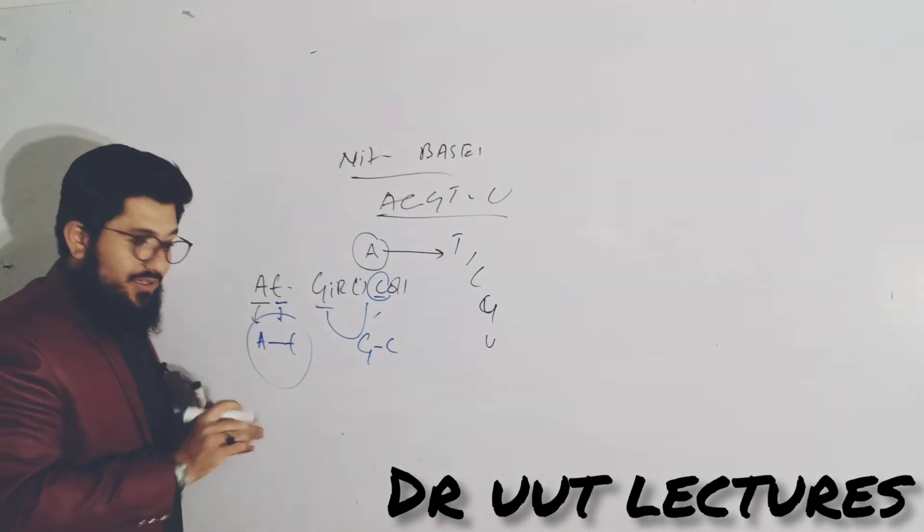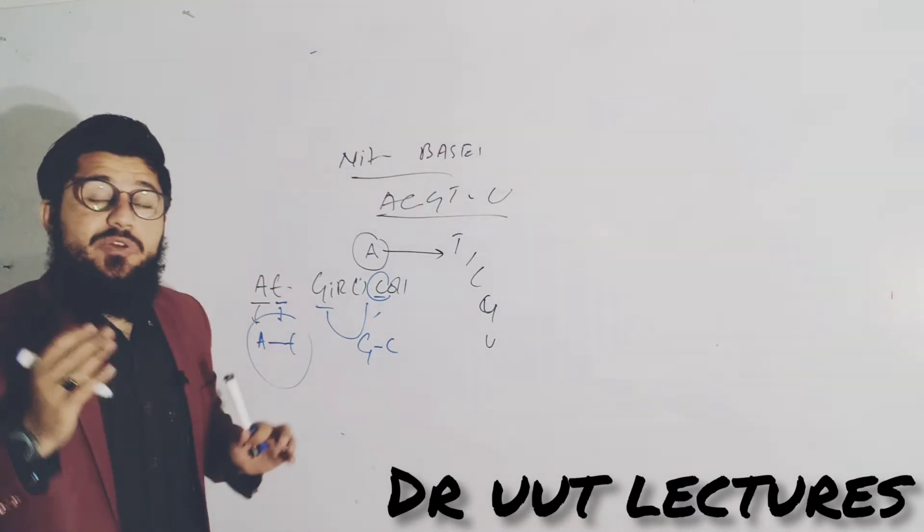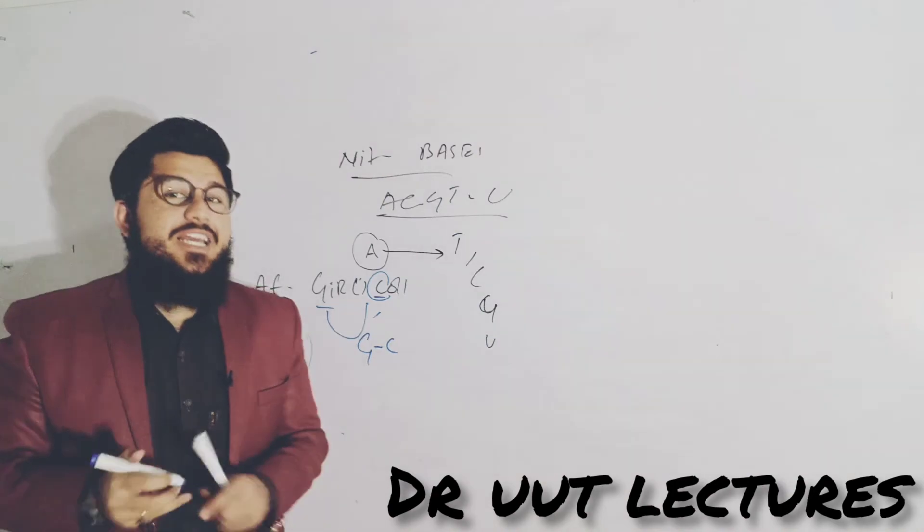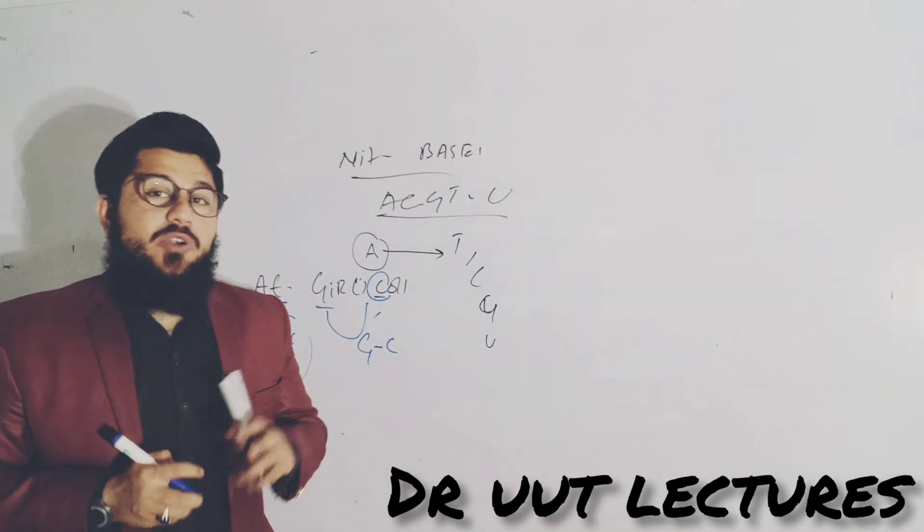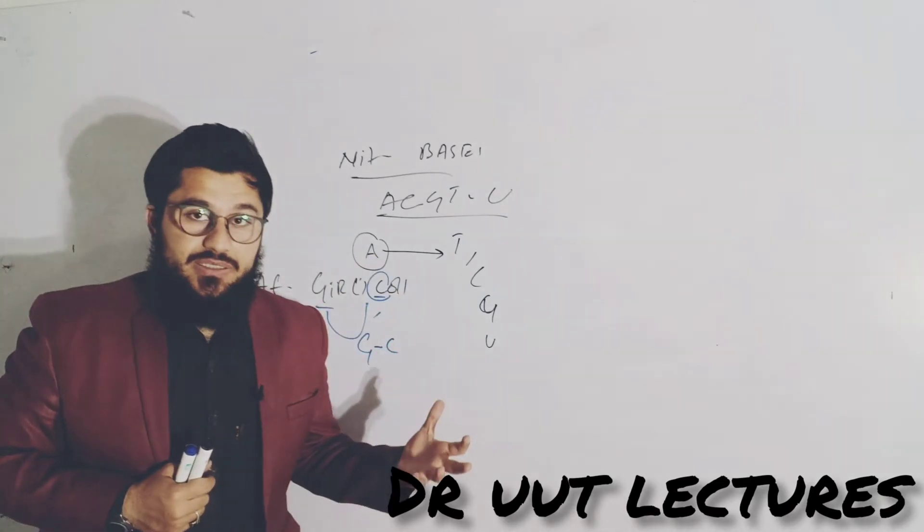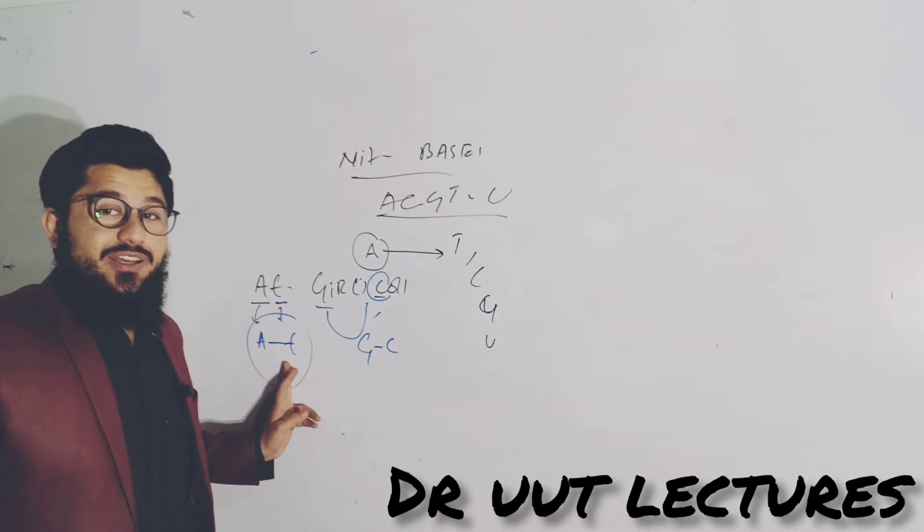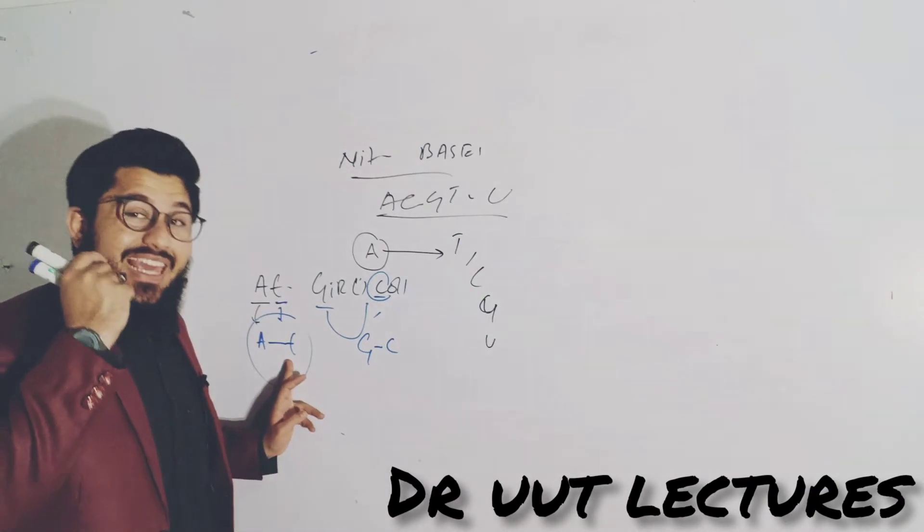The nitrogenous bases: adenine will always bond with thymine, thymine will always bond with adenine. Whenever you are asked anywhere what is A going to bond with, what is adenine going to bond with, tell me the next nitrogenous base. Simple, you will say T.